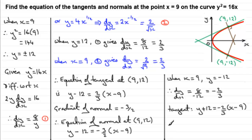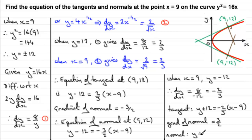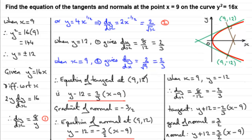For the normal at (9, -12), remember the gradient of the normal is the negative reciprocal of the tangent gradient. Since the tangent gradient is minus 2 thirds, the gradient of the normal is 3 over 2. So the equation of the normal is y plus 12 equals 3 over 2 multiplied by (x minus 9). That gives us the equations of the tangent and normal at both points.